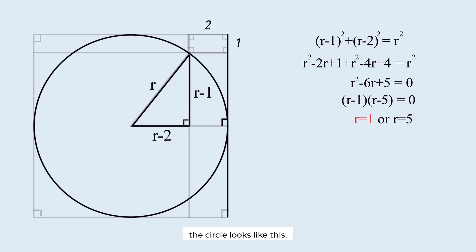If r is 1, the circle looks like this. It does not meet the conditions of the problem. It can't be the answer. The radius is 5.